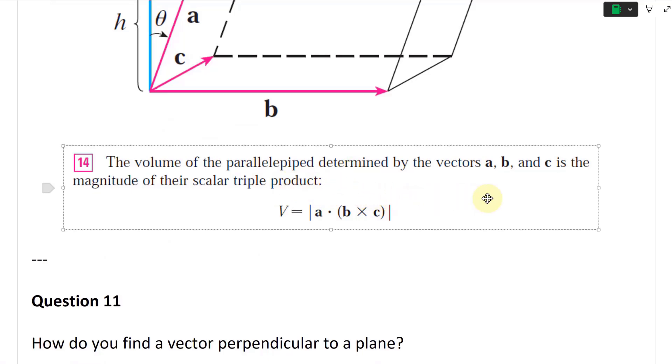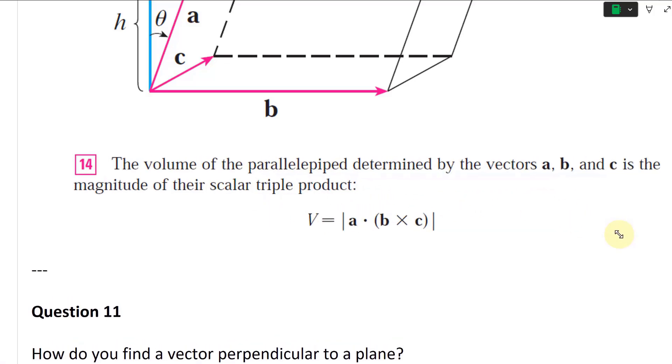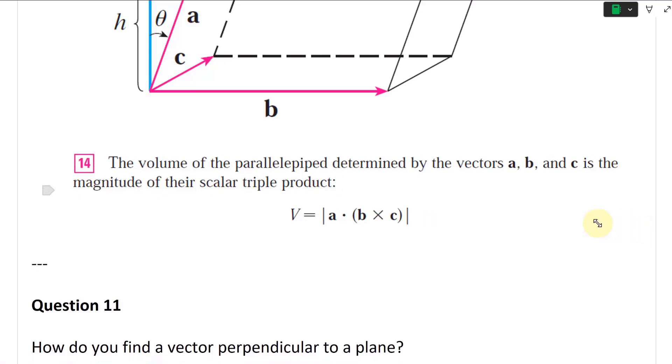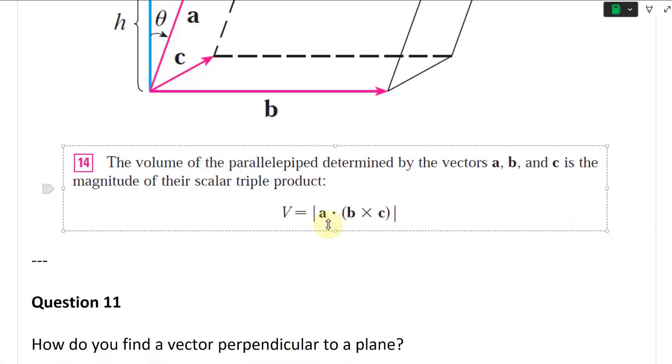And the volume of the parallelepiped determined by vectors A, B, and C is the magnitude of the scalar triple product. Again, screenshot from the calculus book. So V equals the length of A dot B cross C.